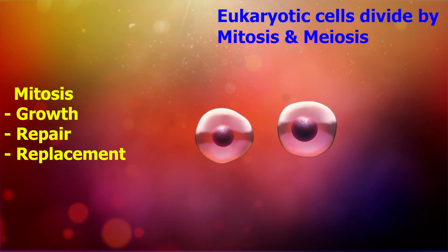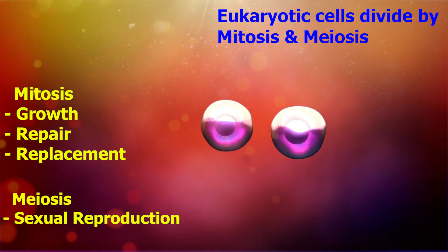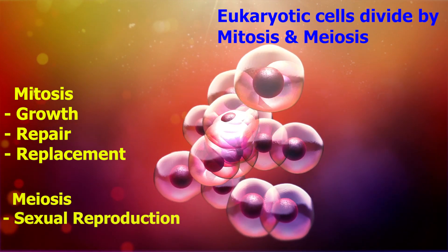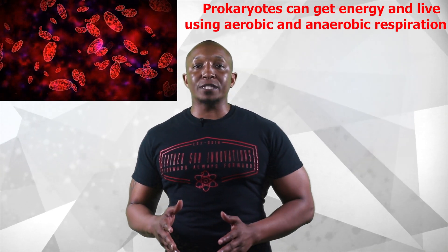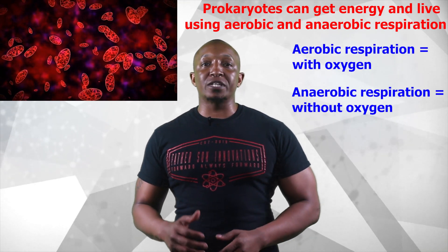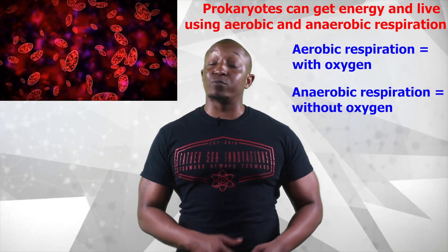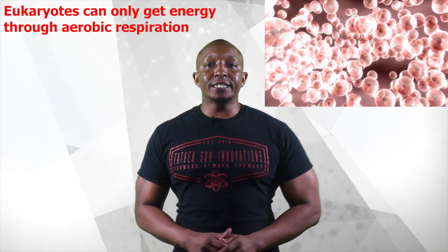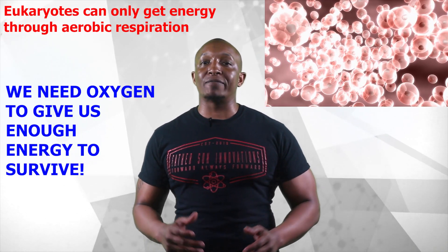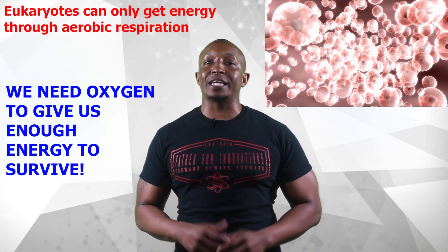Mitosis is for growth, repair, and replacement, and meiosis is for sexual reproduction. Seventh, prokaryotes can acquire energy through anaerobic and aerobic respiration, meaning they can get energy with or without oxygen. Eukaryotes can only acquire energy through aerobic respiration, meaning we need oxygen in order to have enough energy to keep us alive. Without oxygen, we would cease to exist.